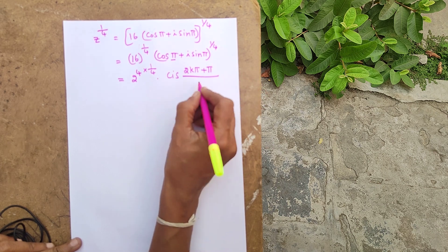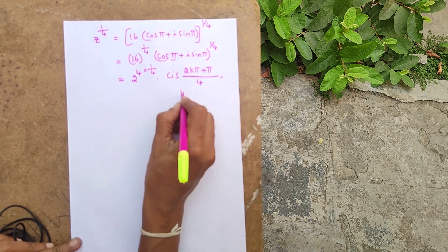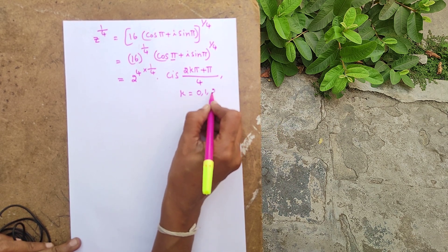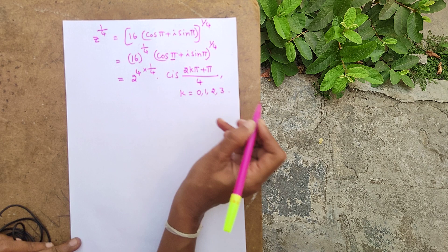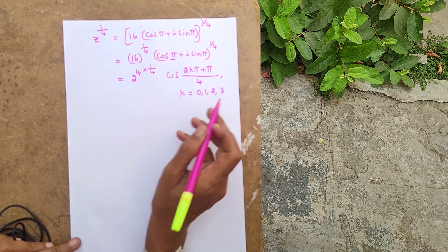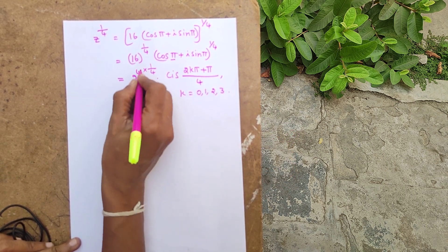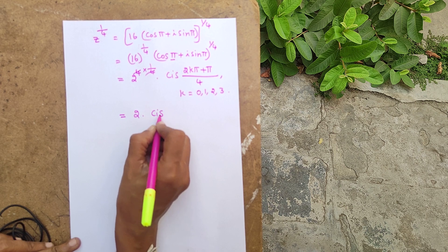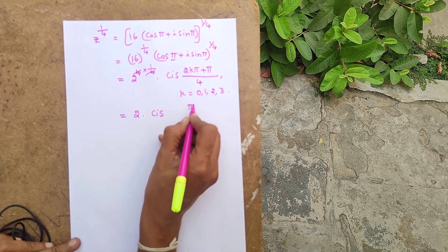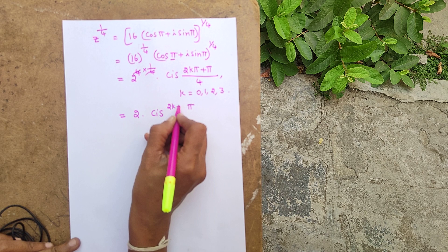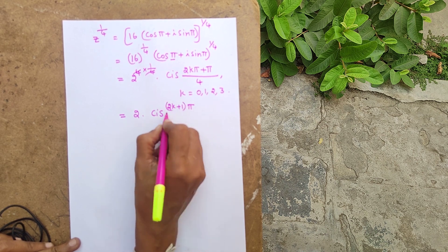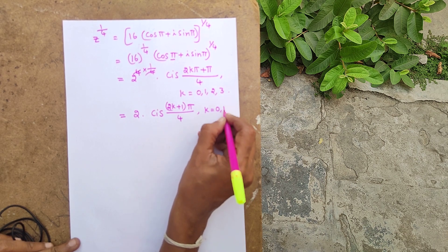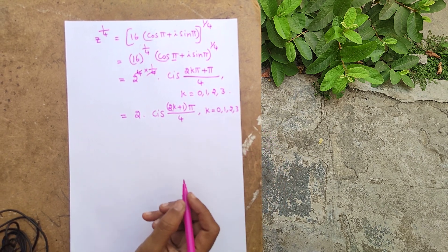Using De Moivre's theorem, the formula gives us 2·cis((2kπ + π)/4), where we place θ = π in the numerator and 4 in the denominator. k takes the values 0, 1, 2, 3, giving us 4 roots.